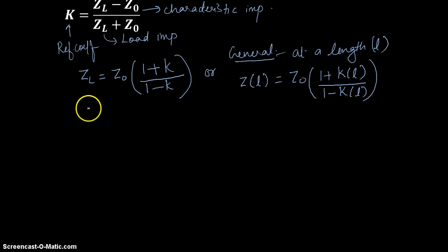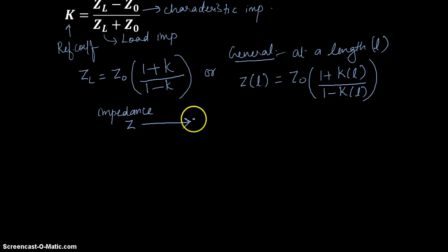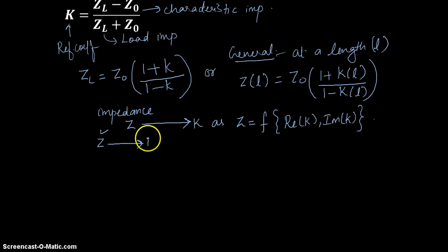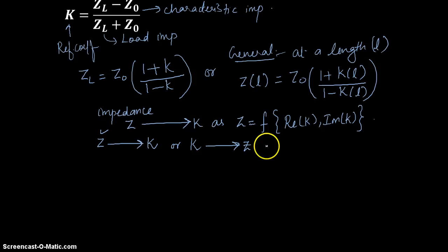From this it is clear that the impedance value Z on a transmission line is related to k as Z is a function of the real part of k and the imaginary part of k. So if I know the value of Z I can generate a plot for k, or if I know k I can generate a plot for Z — and this is what we try to do on a Smith Chart.